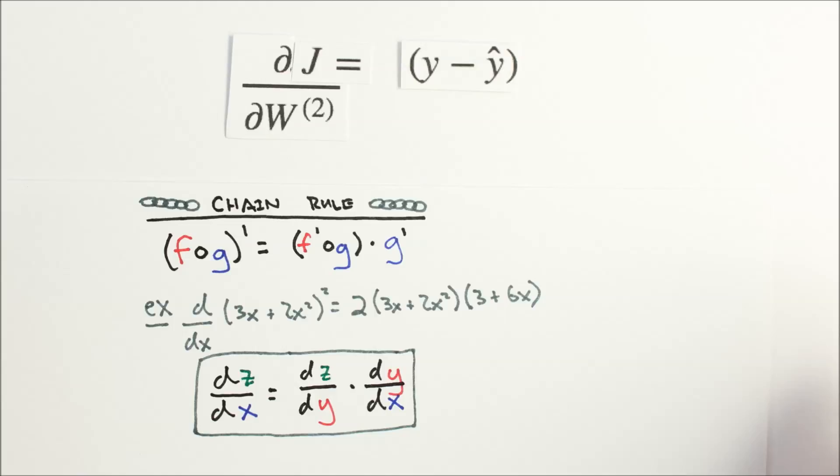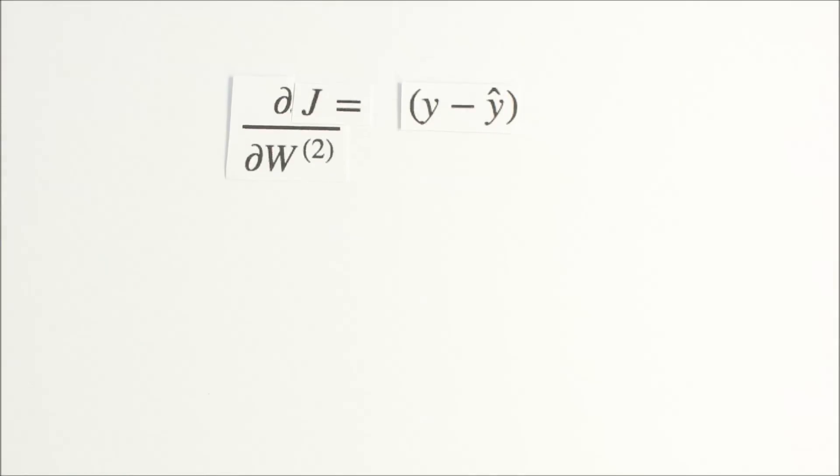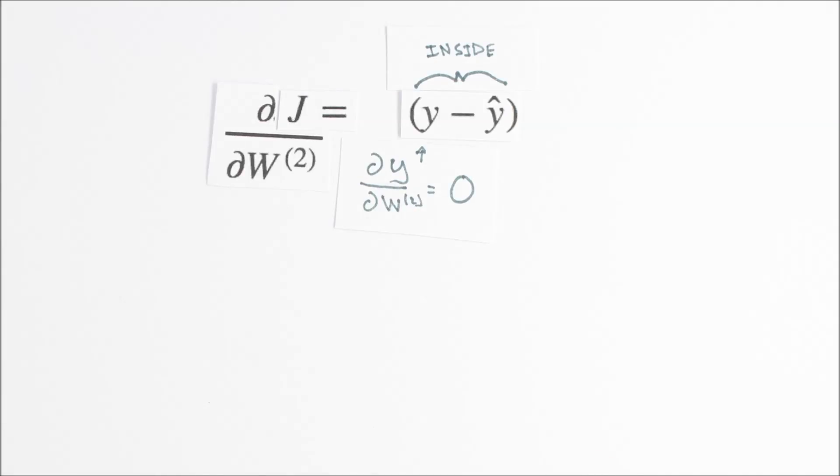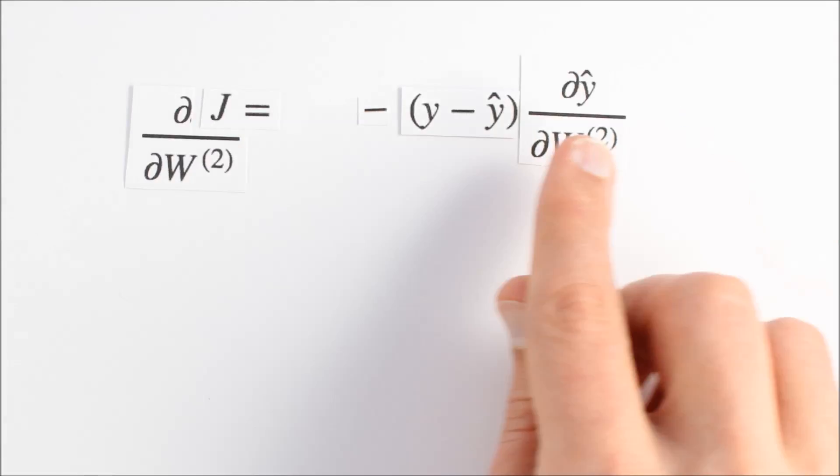We've taken the derivative of the outside of our cost function. Now we need to multiply it by the derivative of the inside. y is just our test scores, which won't change. So the derivative of y, a constant with respect to w, is 0. y hat, on the other hand, does change with respect to w2, so we'll apply the chain rule and multiply our results by minus dy hat dw2.